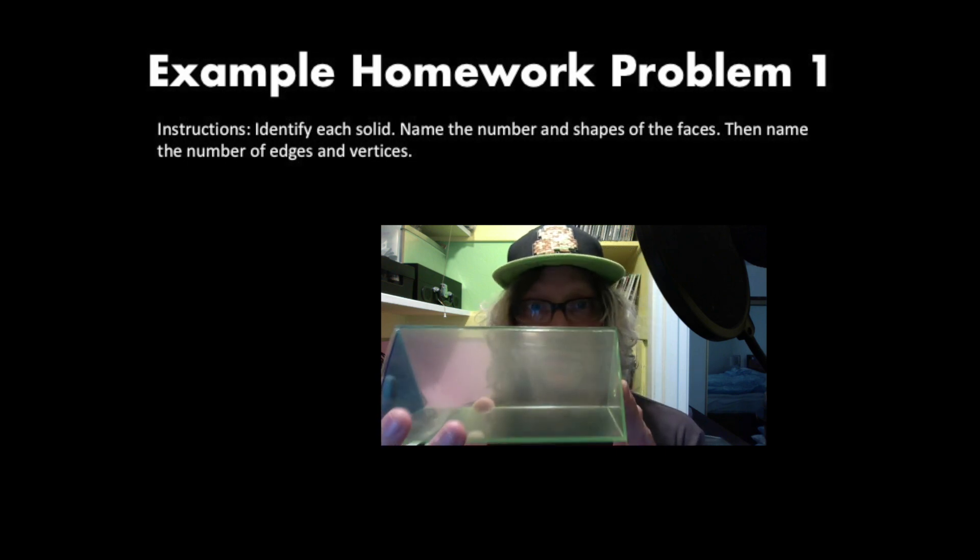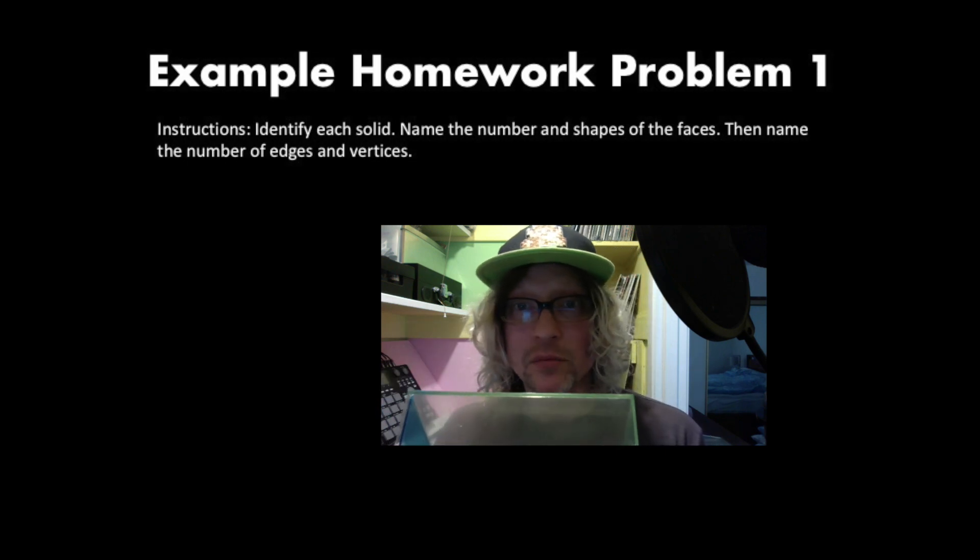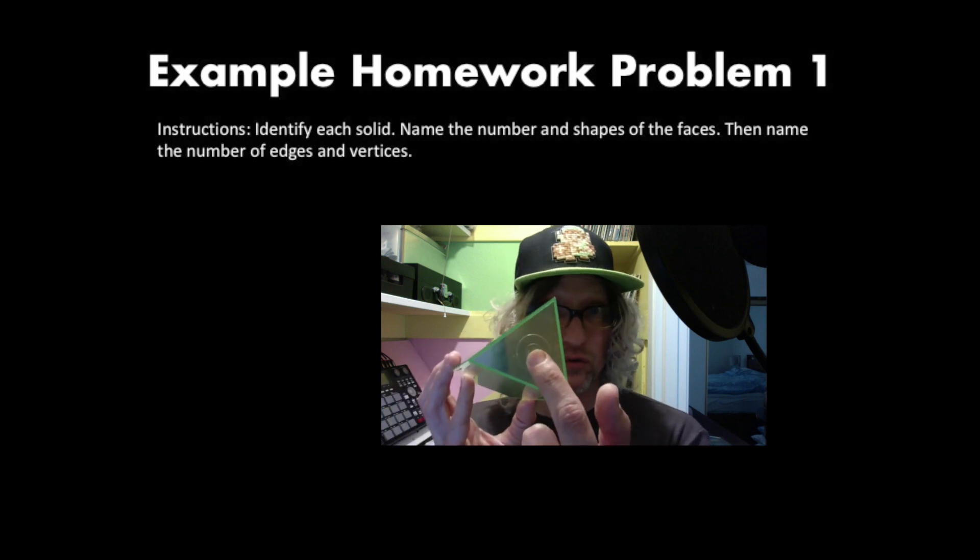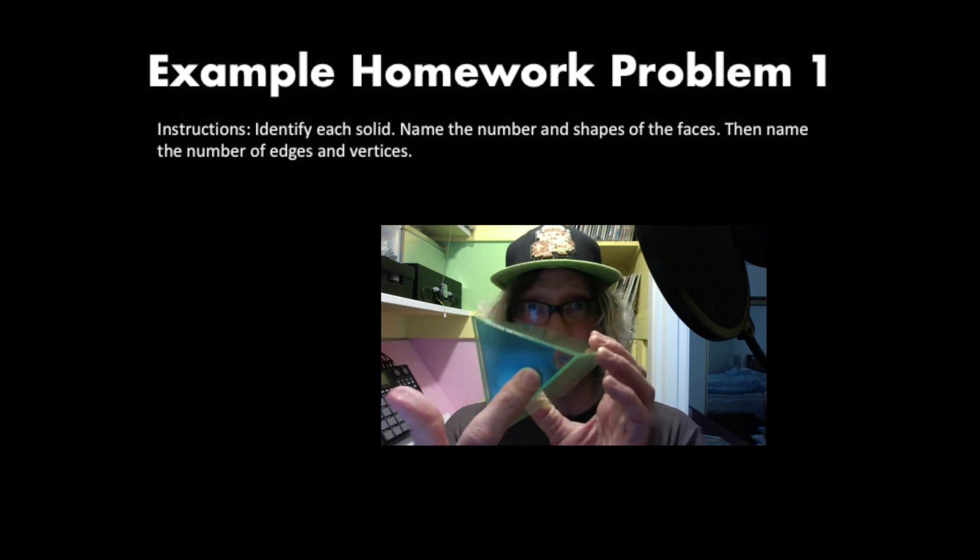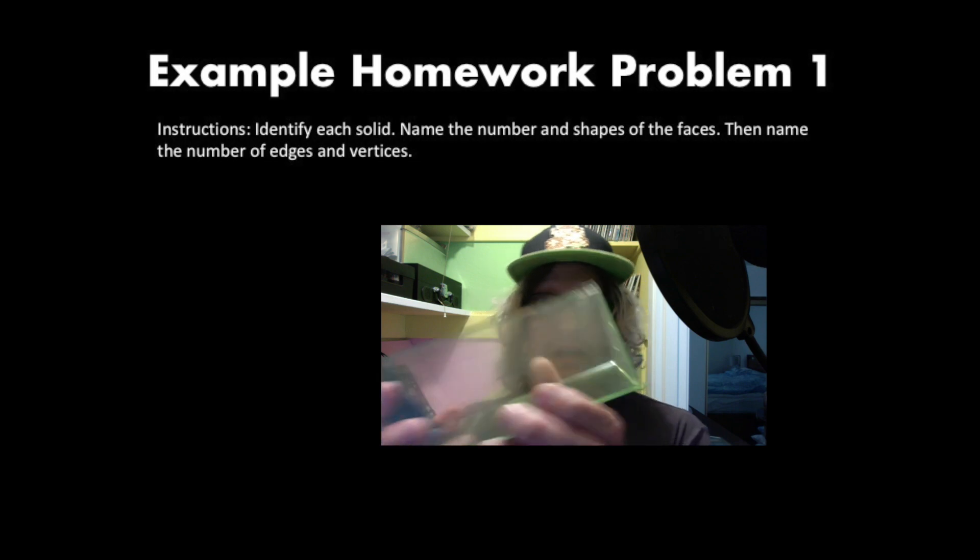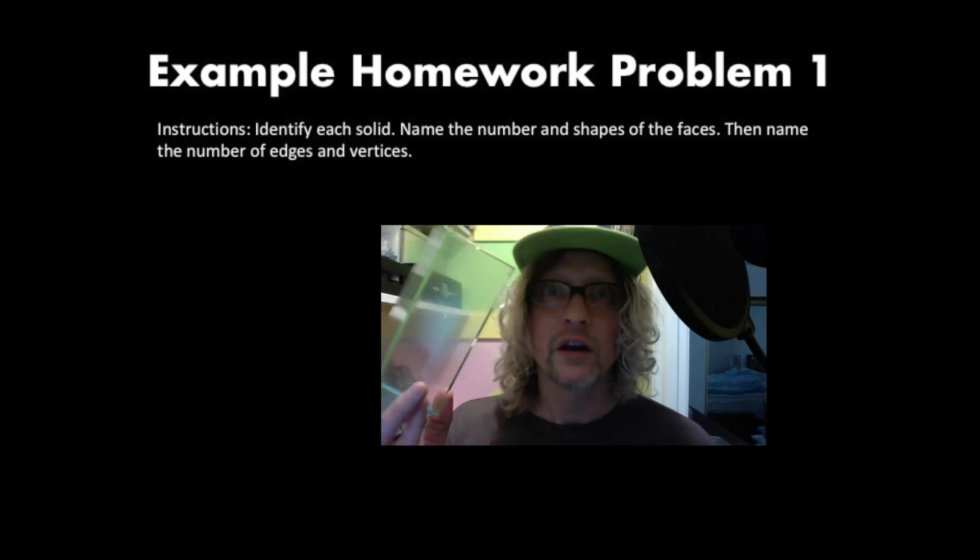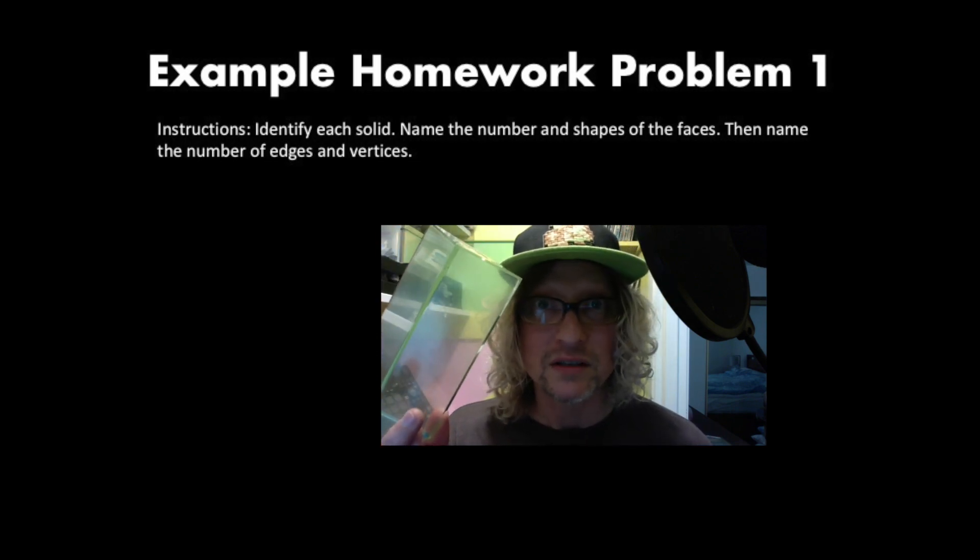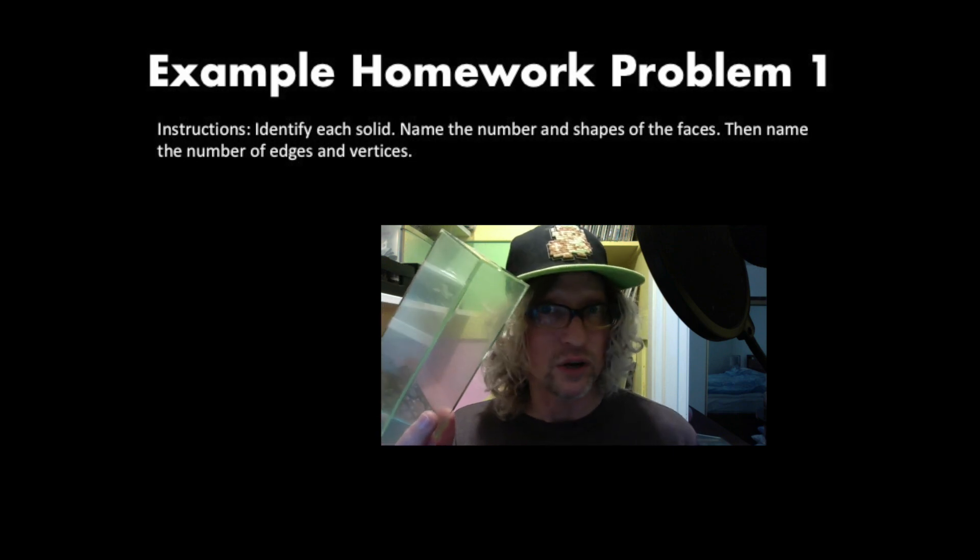All right. It's a triangular prism. Great. Now name the number and shapes of the faces. It's got a triangle here, a triangle here. It's got two triangular faces. It's got one, two, three, three rectangular faces. So that's the answer to that part. It has two triangular faces, three rectangular faces.